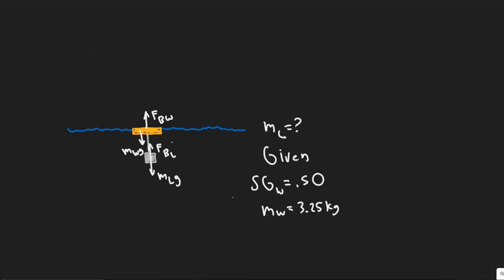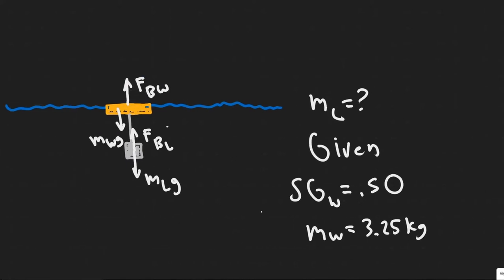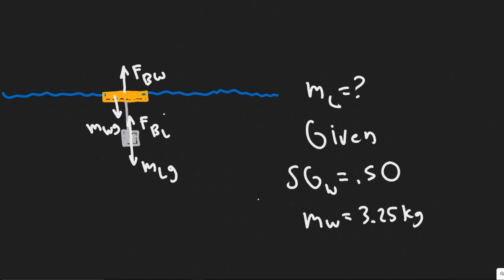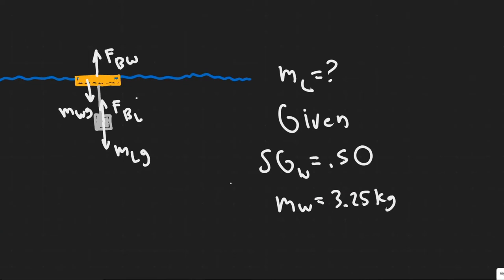In this problem, we're told a 3.25 kilogram piece of wood with a specific gravity of 0.5 floats on water. What minimum mass of lead hung from the wood by a string will cause it to sink? We have a wooden plank with a piece of lead hanging from it, and we're trying to find the minimum mass of the lead that will cause the whole thing to sink. We're given the specific gravity of the wood, which is 0.5, and the mass of the wood, which is 3.25 kilograms.